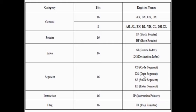Data segment register: a 16-bit register containing the address of a 64 KB segment with program data. By default, the processor assumes that all data referenced by general purpose registers AX, BX, CX, DX and index registers SI and DI is located in the data segment.